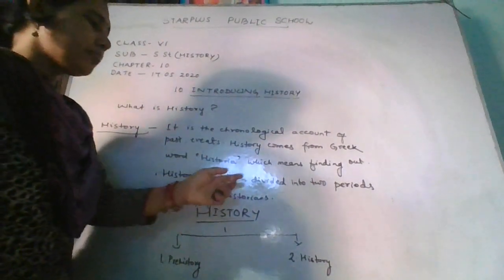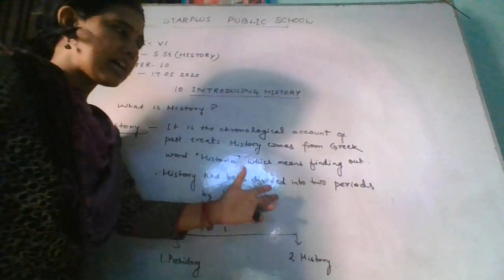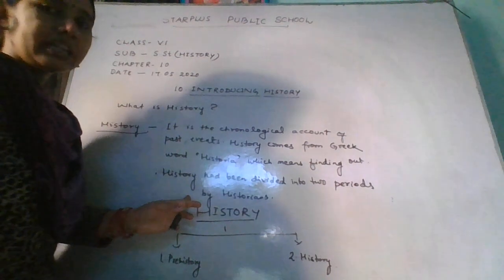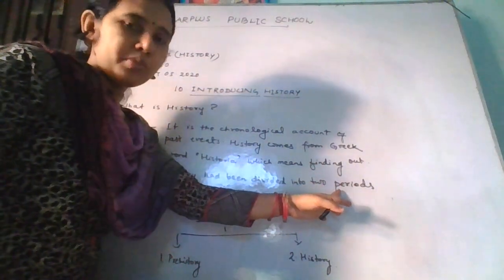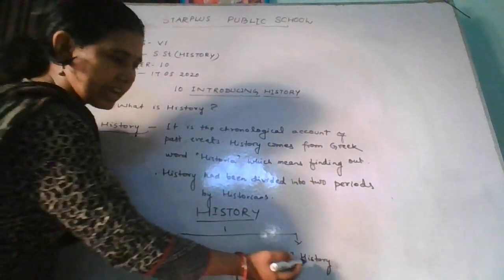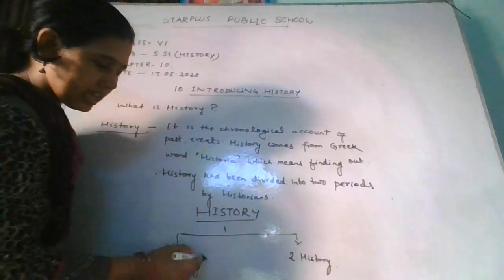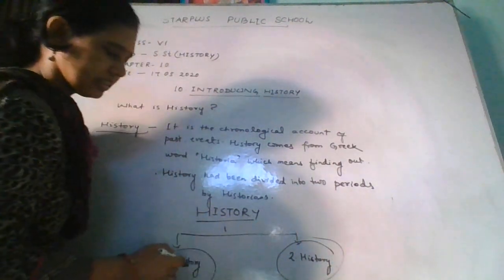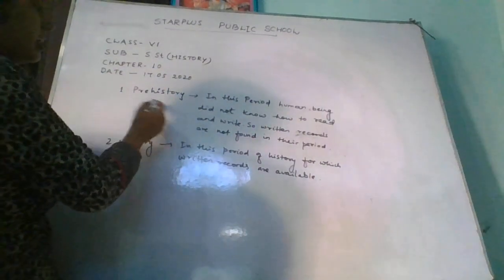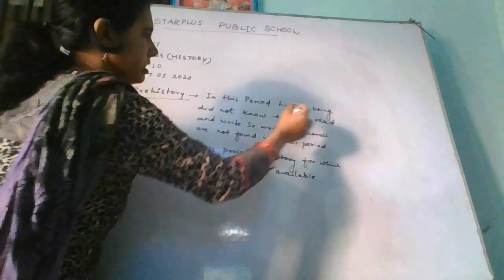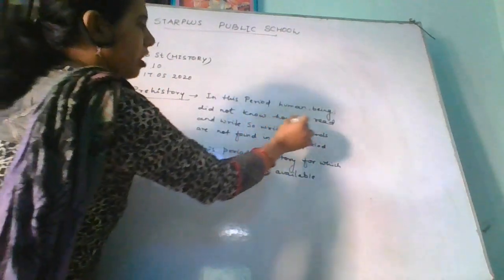This history has been divided into two periods. The first part is prehistory and the second is history. In the period of prehistory, human beings did not know how to read and write.